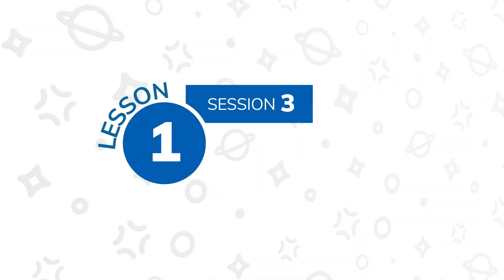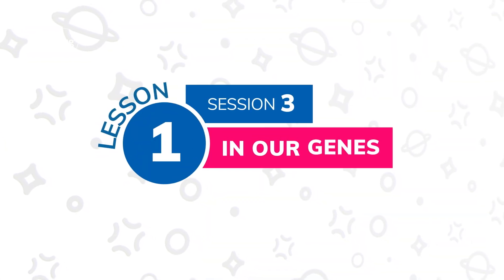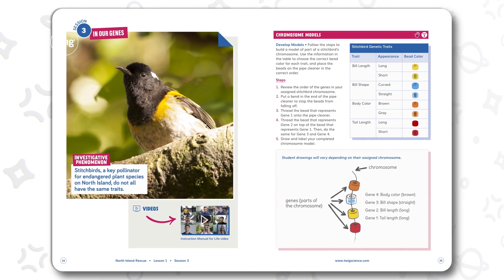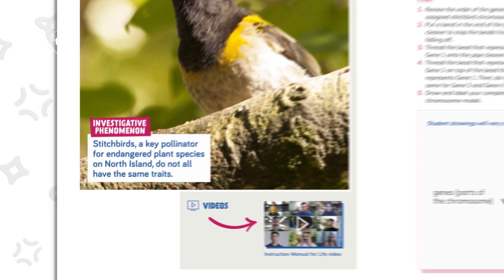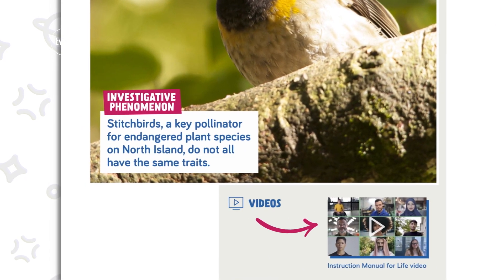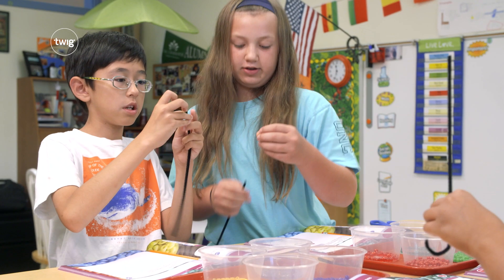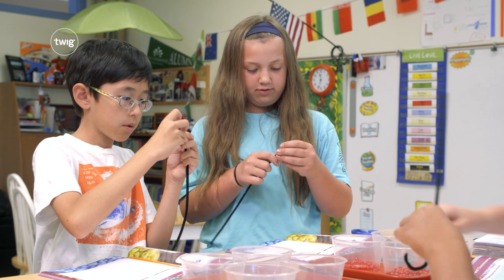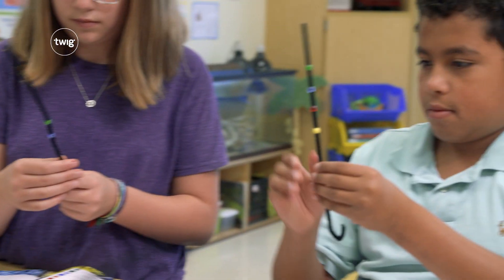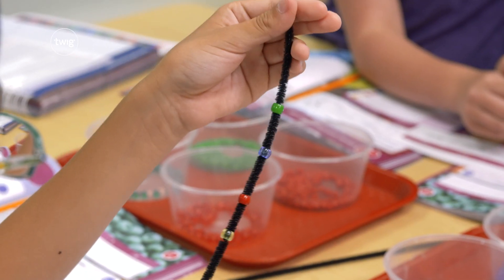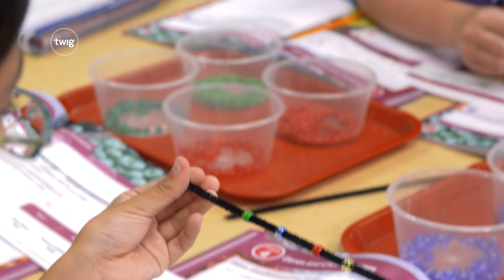In session 3, students explore the investigative phenomena that stitchbirds — a pollinator on North Island in New Zealand — have different versions of some traits, such as feather color. Students then build sample models of stitchbird chromosomes, using beads to represent specific genetic traits.